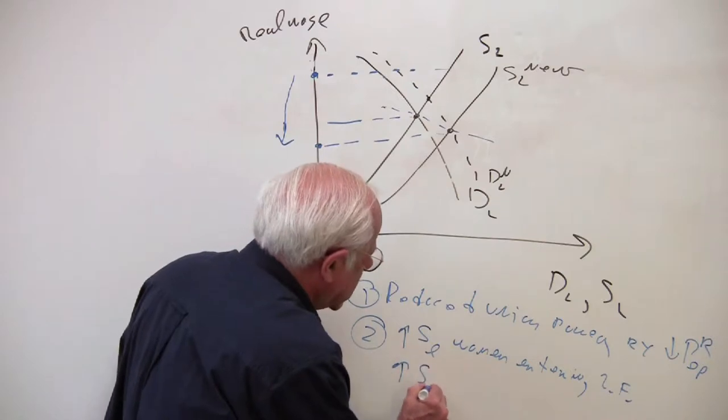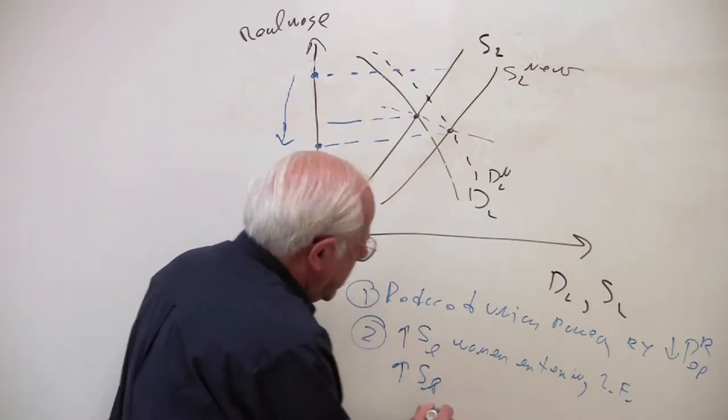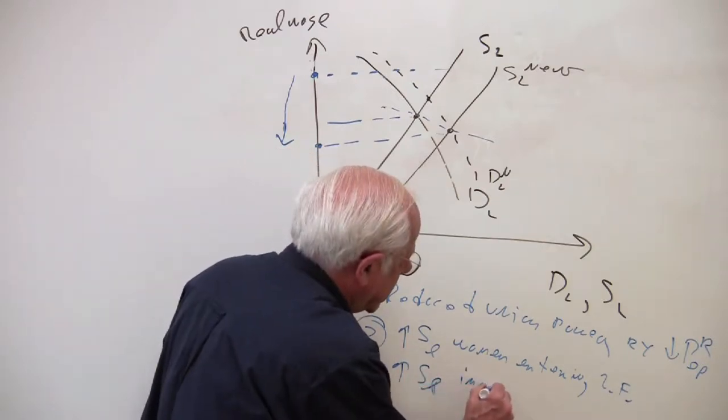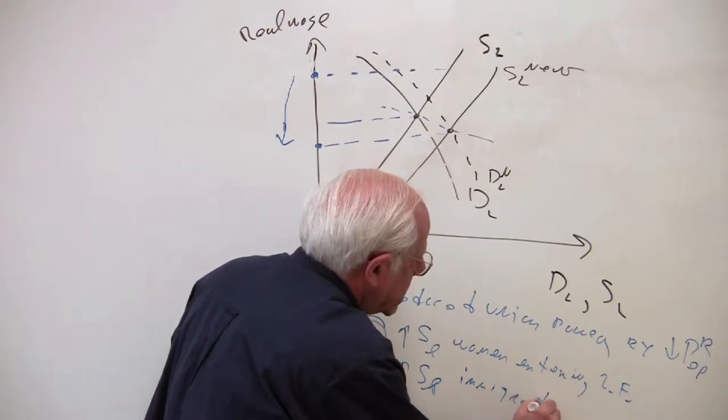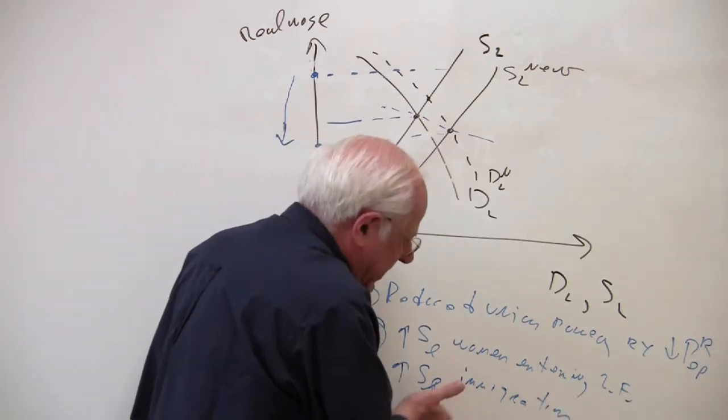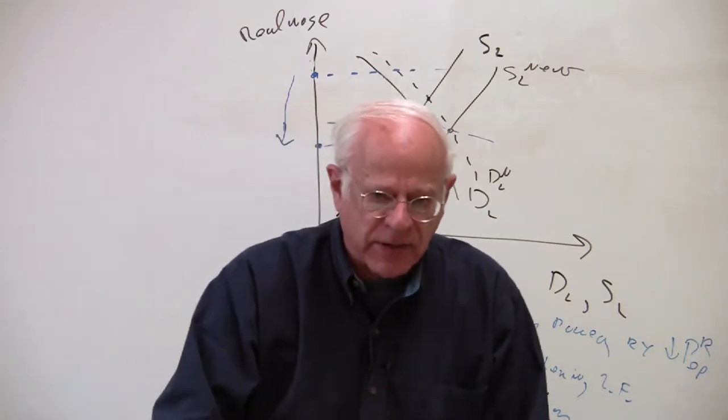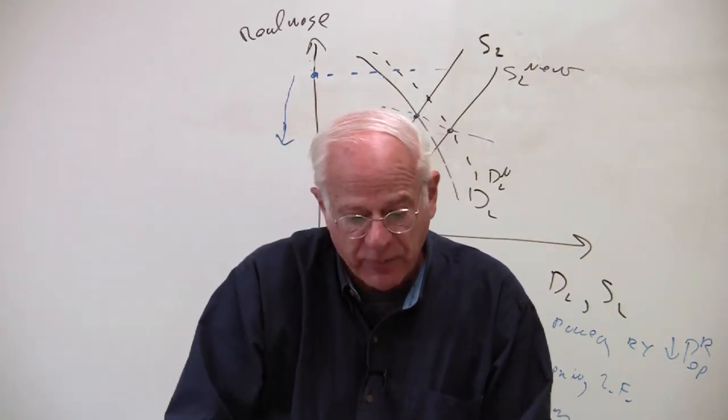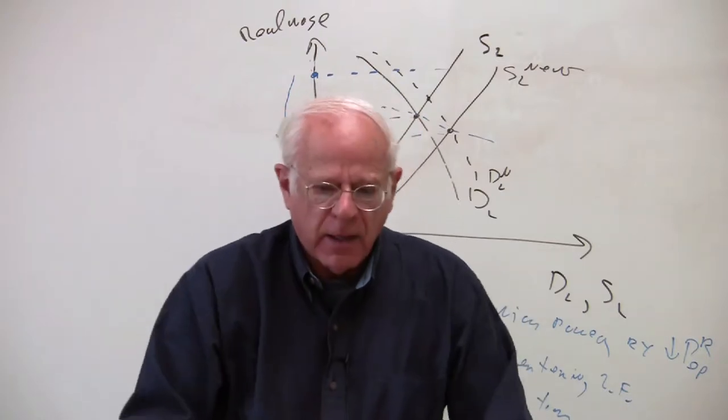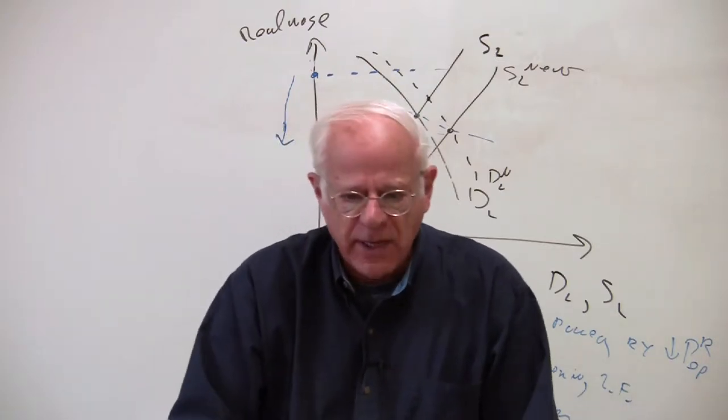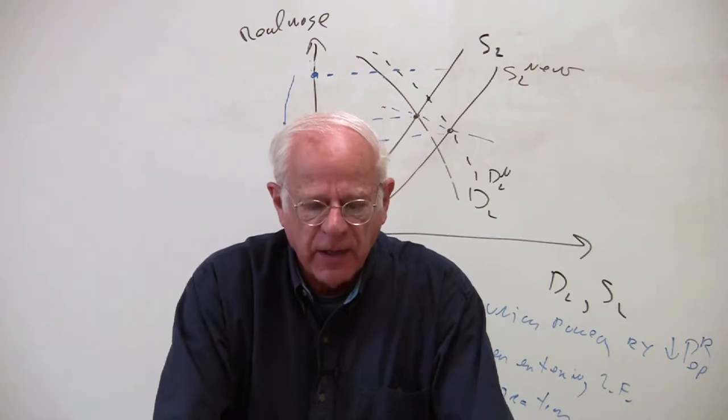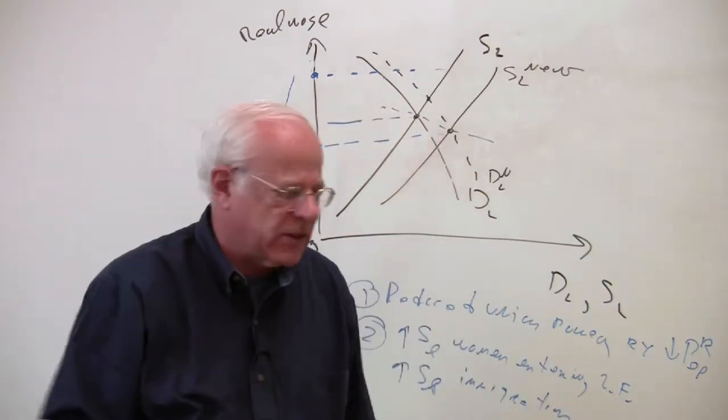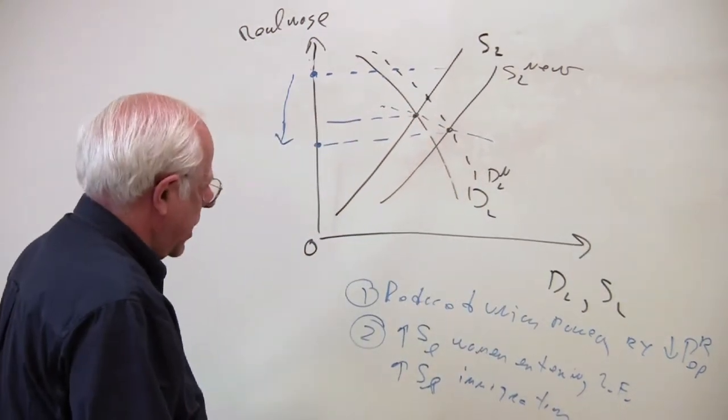Secondly, the supply increases because of immigration. So into the United States during this period of time comes waves of legal and illegal immigrants, which puts downward pressure on the price of labor market as they come into the labor force taking a variety of different kinds of jobs. First low paying jobs, then moving up the scale to more high paying jobs.